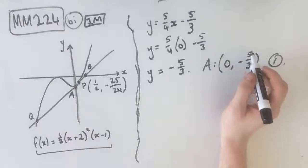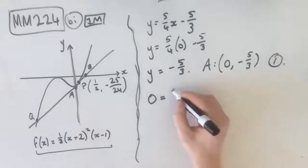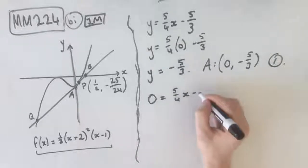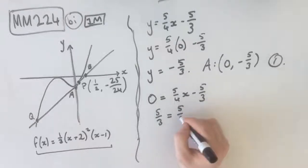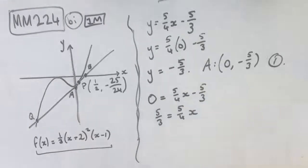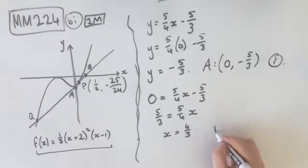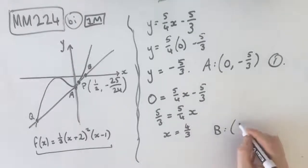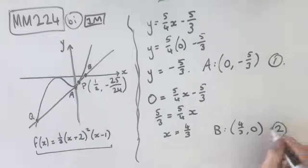And now we need to find B, which is our x-intercept. So that's when y equals 0. So 0 equals 5/4x - 5/3. 5/3 equals 5/4x. And then from here, x equals 4/3. Therefore, B occurs at (4/3, 0). And that's our second mark.